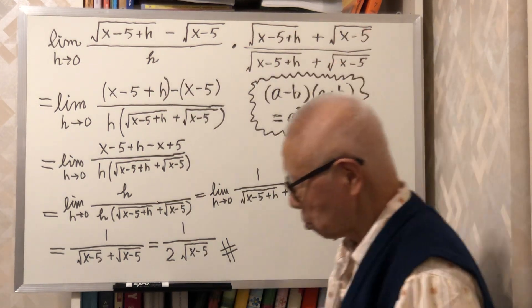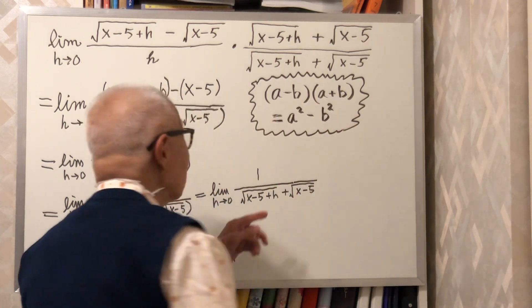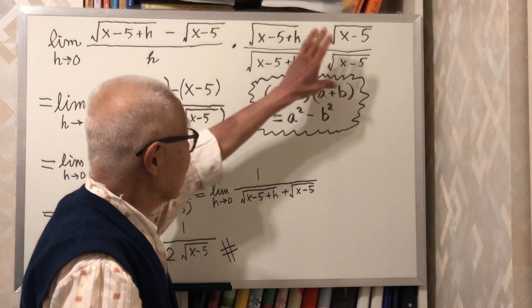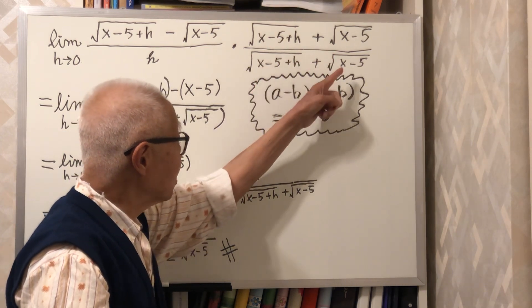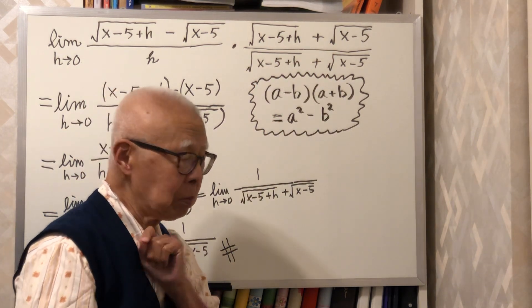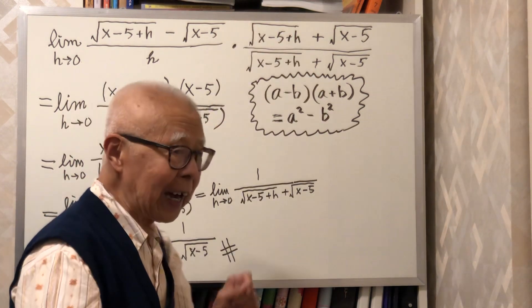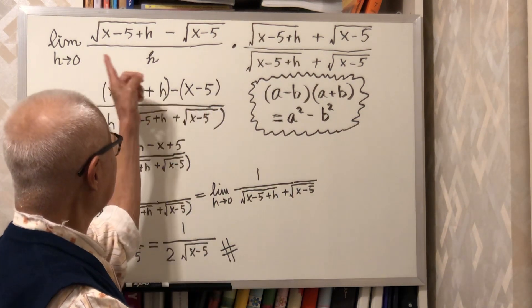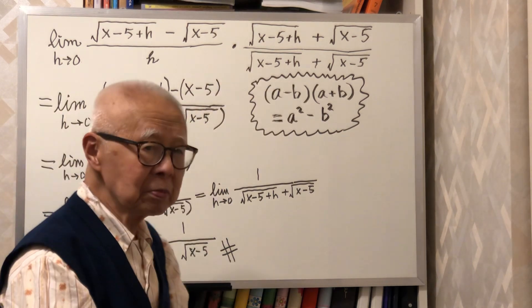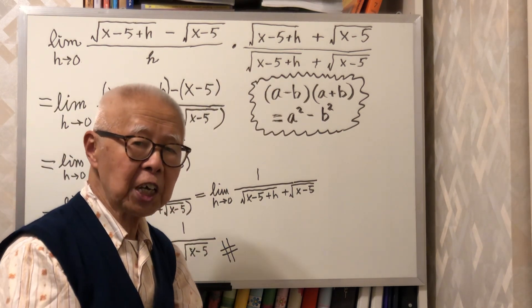Now, look at this factor. The numerator and the denominator are the same, so this factor is actually 1. You multiply this by 1, you do not change anything.